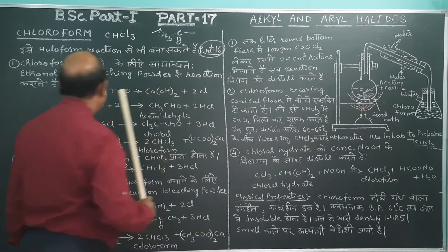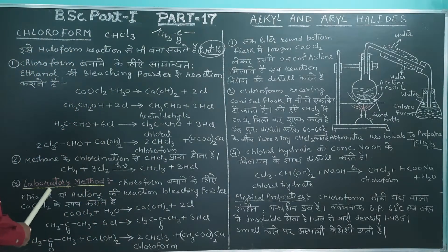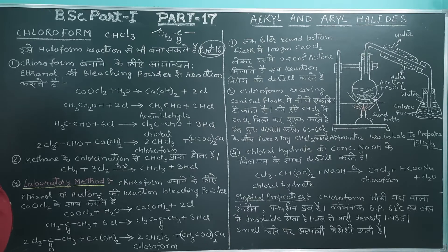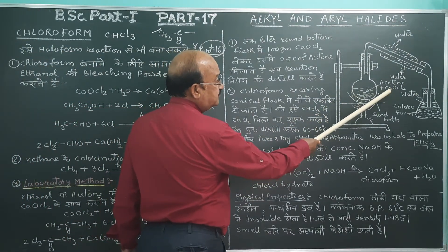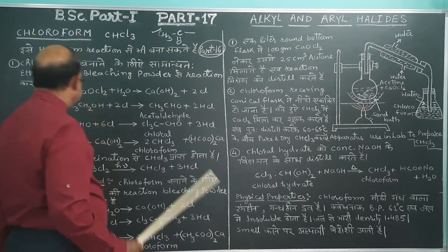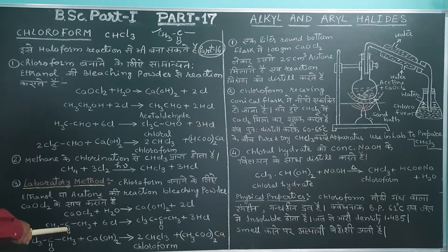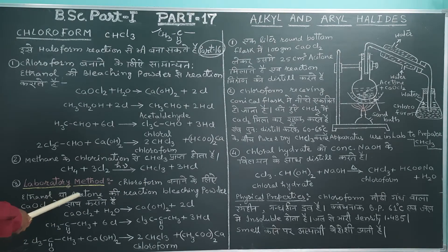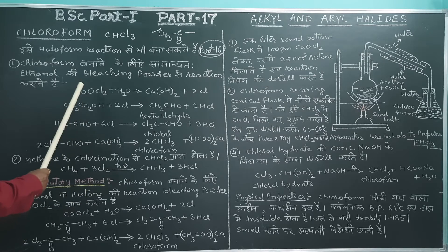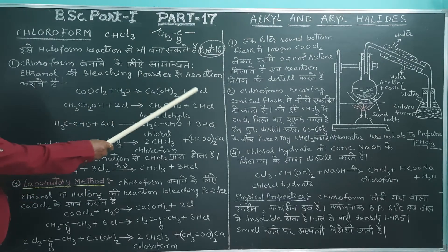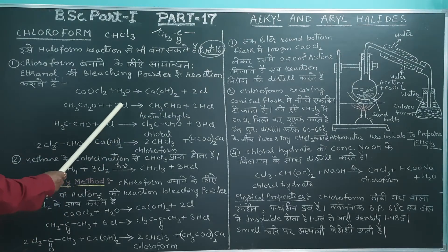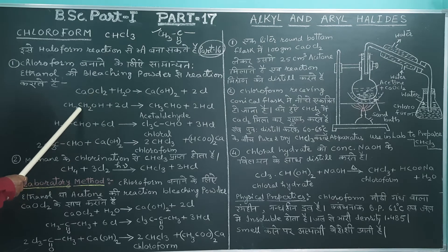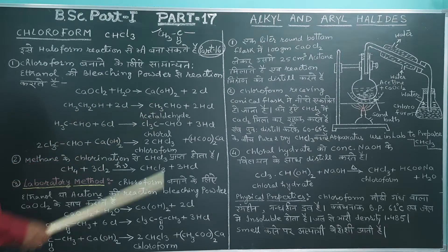In the reaction mixture, we have taken CaOCl₂ and ethanol. In the laboratory method, we also use acetone — we can take either ethanol or acetone. So the reaction mixture is CaOCl₂ plus acetone (or ethyl alcohol). When bleaching powder is dissolved in water, chlorine in elemental state is formed. This chlorine, when it reacts with ethanol, causes removal of 2HCl and formation of acetaldehyde.